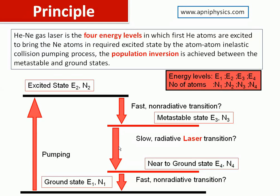I will discuss the energy levels and how transitions take place between them, especially for the four energy levels which are the main component of the helium-neon gas laser. There are four energy levels: the ground state, the excited state represented by E2 with N2 atoms, the energy level E1 with N1 atoms, and the energy level E4 with N4 atoms.